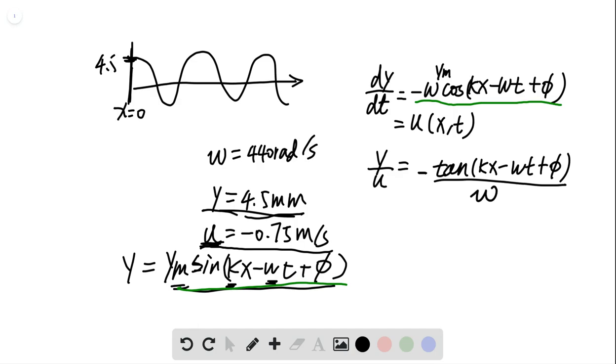So at x equals 0, t equals 0, this tangent is equal to negative tangent phi over omega at x equals 0 and t equals 0. But now we have phi as a relationship of y, u, and omega. And we know what y is, we know what u is, and what omega is.